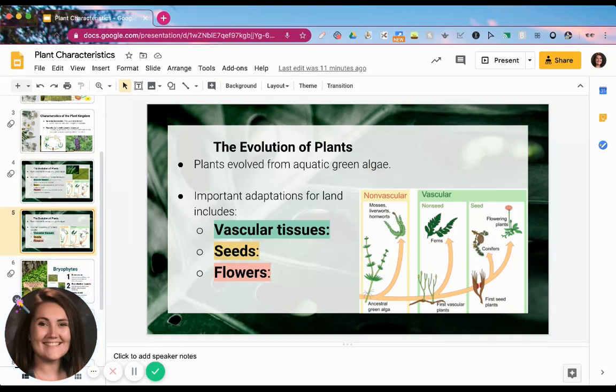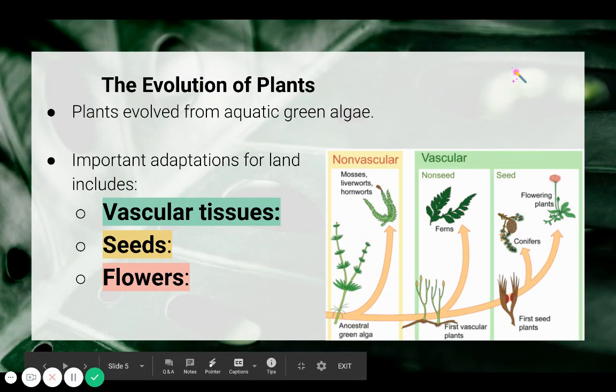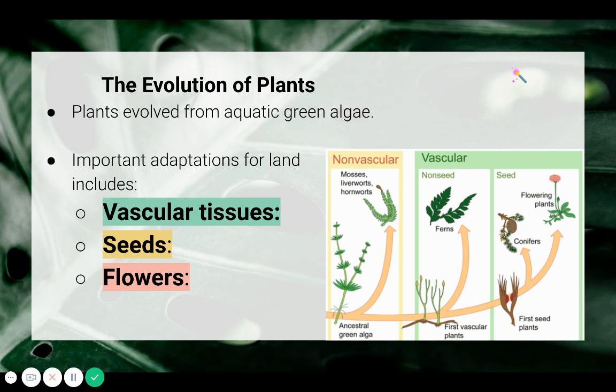Welcome to part two of the screencast. This is Ms. Longley. We're going to be looking at the four major plant groups. We talked about in screencast one that plants have evolved from their aquatic ancestors, green algae. So what we're going to do next is look at these four major plant groups and see how they have adapted to life on land. We're going to start with the first group, which is most closely related to its ancestor green algae.